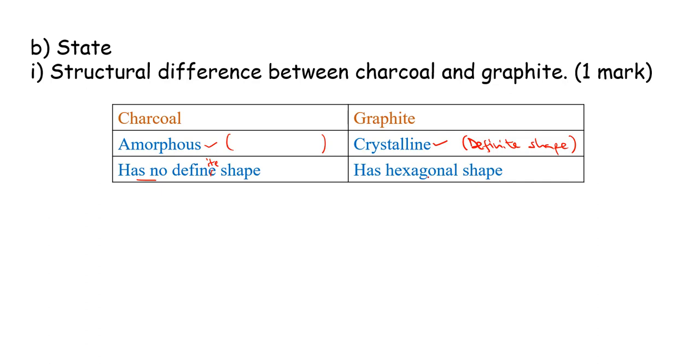Let us write here definite shape. While this one has a hexagonal shape. If you remember the structure of our graphite, it tends to form hexagonal layers. So if we say that it has a hexagonal shape, it shouldn't be that confusing. So these are some of the differences you can give because they said structural differences.